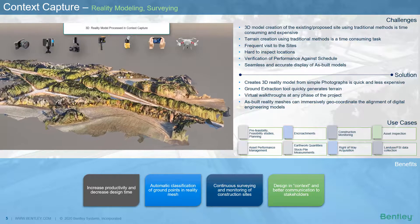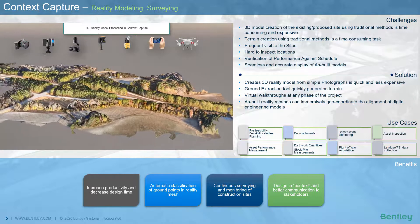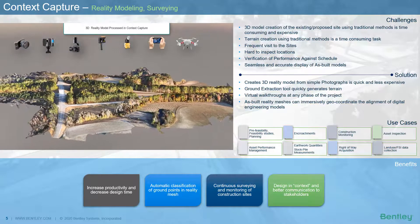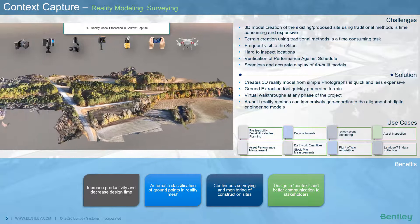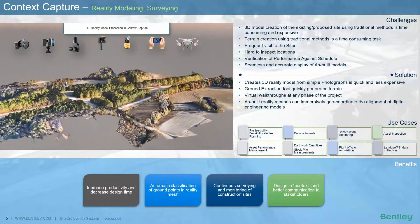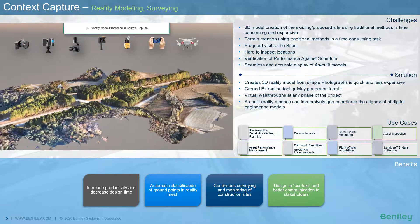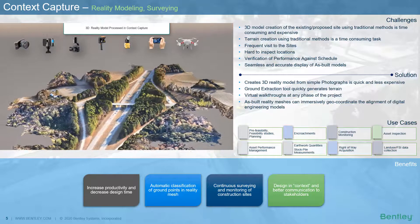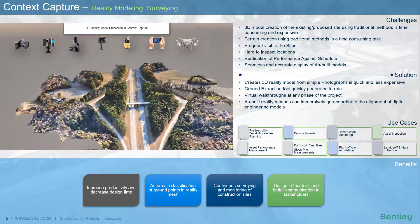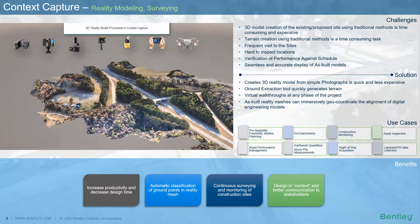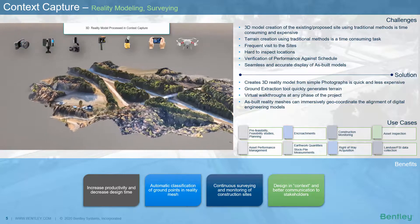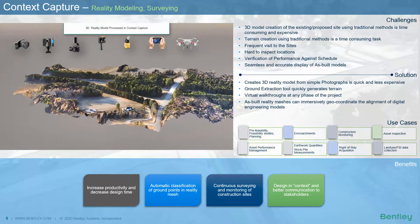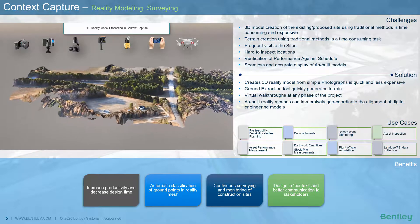3D reality models have all the true geometric information — latitudes, longitudes and elevations — and offer true measurement for distance, areas, volumes, and can provide virtual walkthroughs with reality in context. These 3D reality models can be used for planning, encroachments, right of way acquisition, construction monitoring, etc.